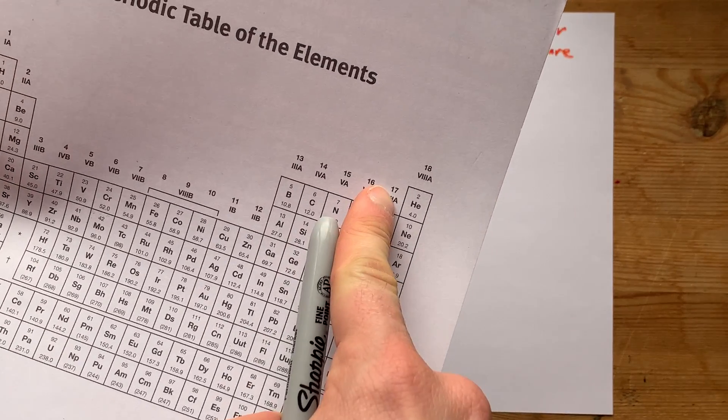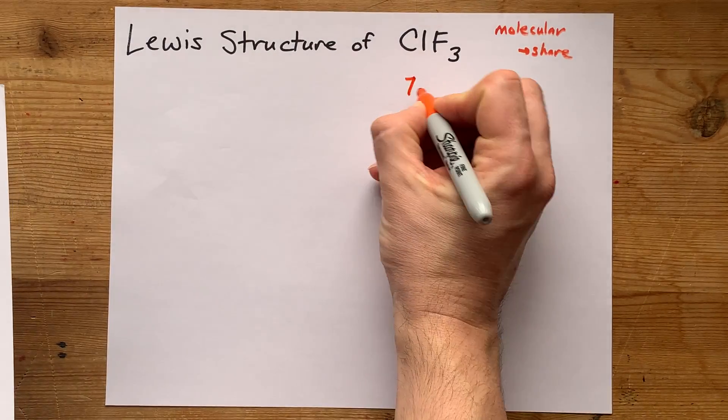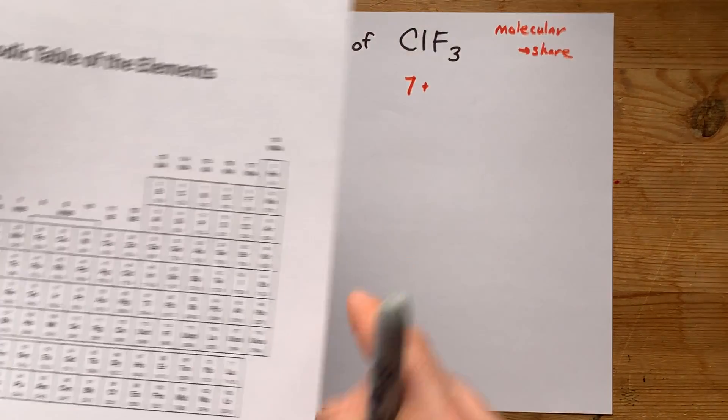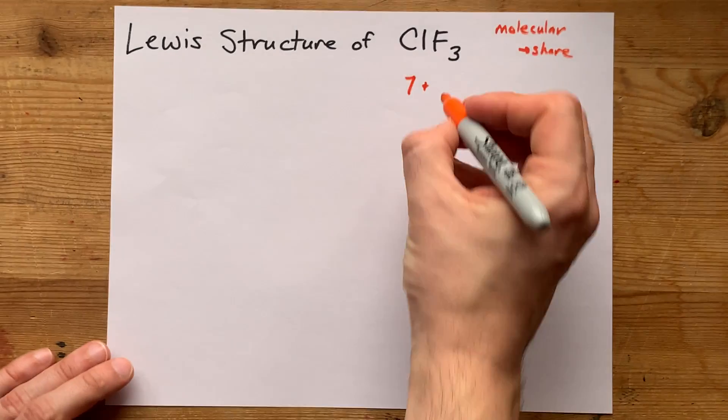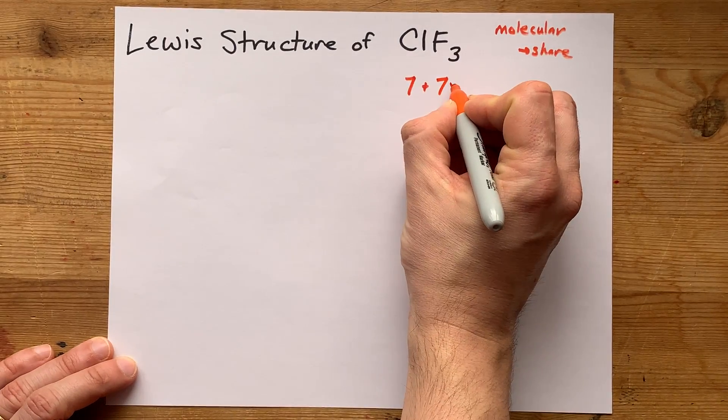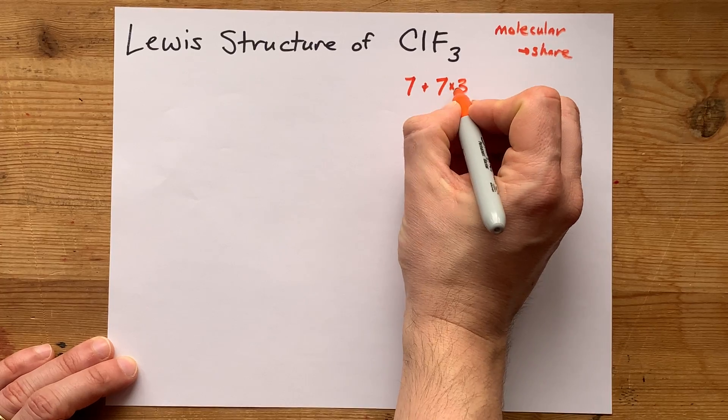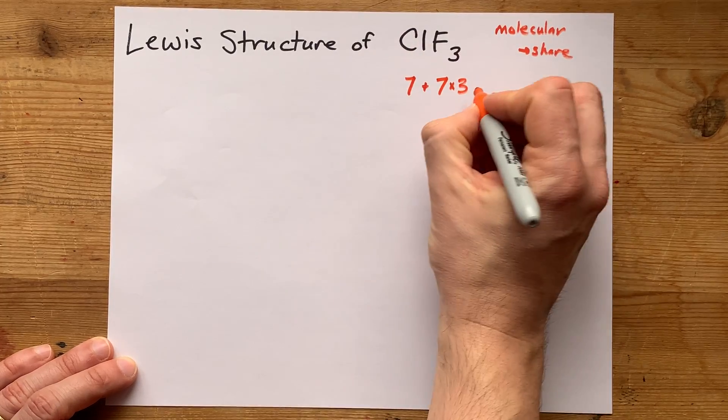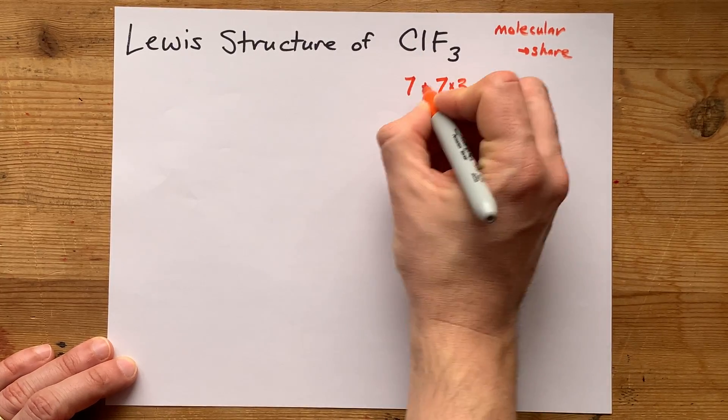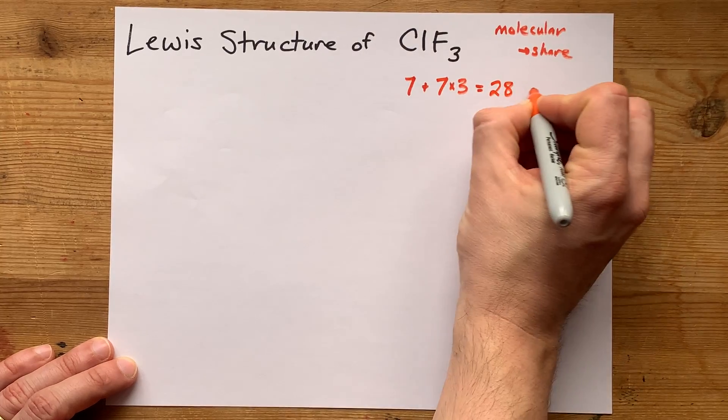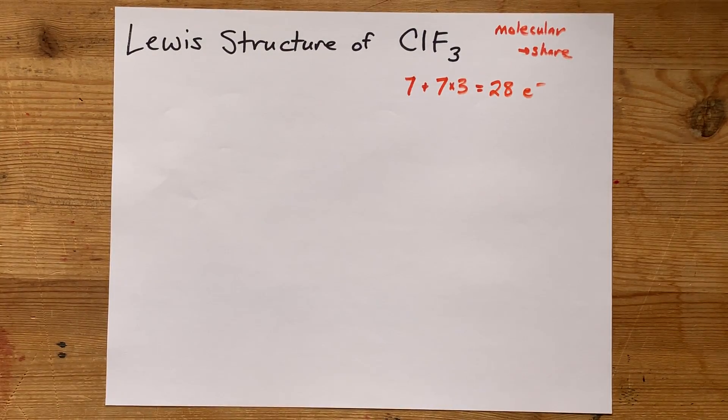Chlorine is in group 17, so it brings seven valence electrons. Fluorine is also in group 17, so that's seven valence electrons each, but there's three of those. Three fluorines, one chlorine. That makes 21 and seven is 28 valence electrons total that we'll have to deal with.